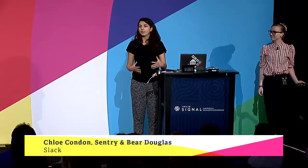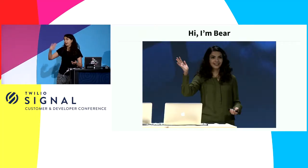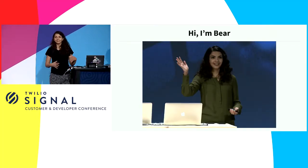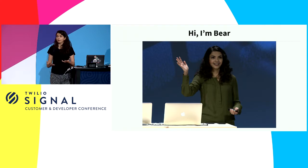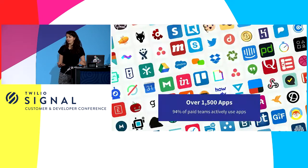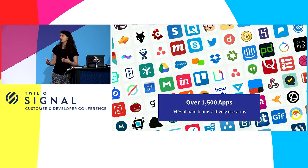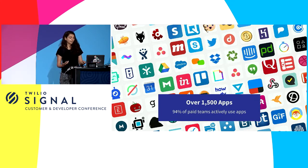Thanks, Michelle, and thanks everybody. We're really excited to talk to you today about the lessons that we've learned as the Slack platform from seeing over a thousand apps built on Slack, and Chloe is going to share some insights that Sentry learned when they were building their app for Slack. I'm Bear, I lead developer relations at Slack. It's our job to write developer documentation, build developer tools, and do educational events that help anyone interested in writing a Slack app do it effectively, easily, and with help from us. On our app directory, there are over 1,500 apps listed right now, and most paid teams are actively using apps — 94% are actively using at least one app for their day-to-day work.